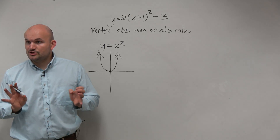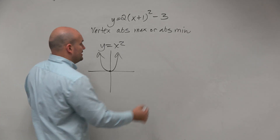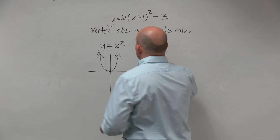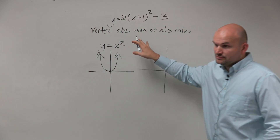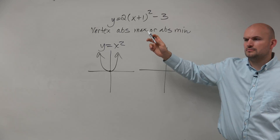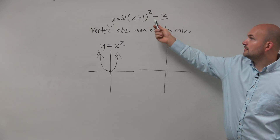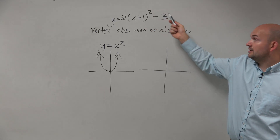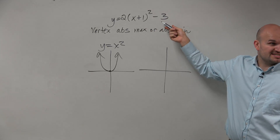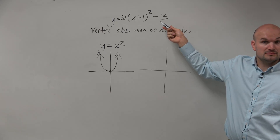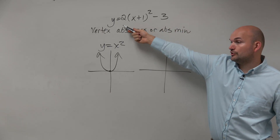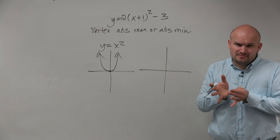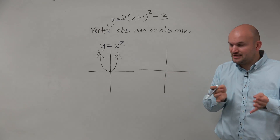Now let's go with what's happening on the transformations. We know from unit one, this graph is being shifted one unit to the left and then three units down. Would everybody agree? There's also a vertical stretch of two, but that's not really going to be affecting the vertex.